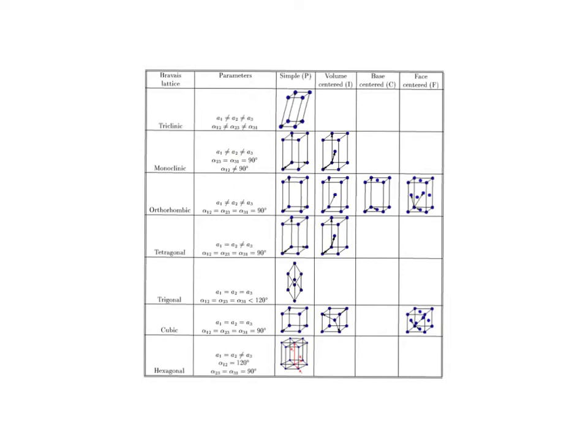The other crystal systems are systematically more symmetric than the triclinic. For example, the monoclinic system — the second one in this list — is again composed of unit cells whose unit vectors have magnitudes that are not the same: A1 ≠ A2 ≠ A3. But two of the angles are equal to 90 degrees and the third is not 90 degrees. That makes it a special case of the general triclinic system.